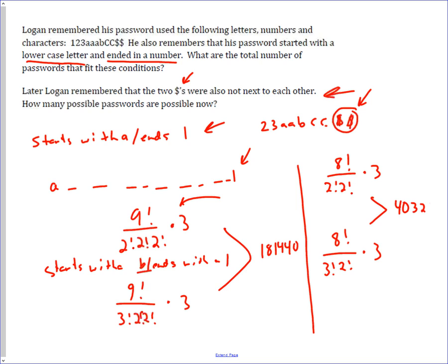So there are 40,320 ways that the two dollar signs are together. There are 181,440 total ways to do it, so you just subtract those two, and that is your answer, 141,120.